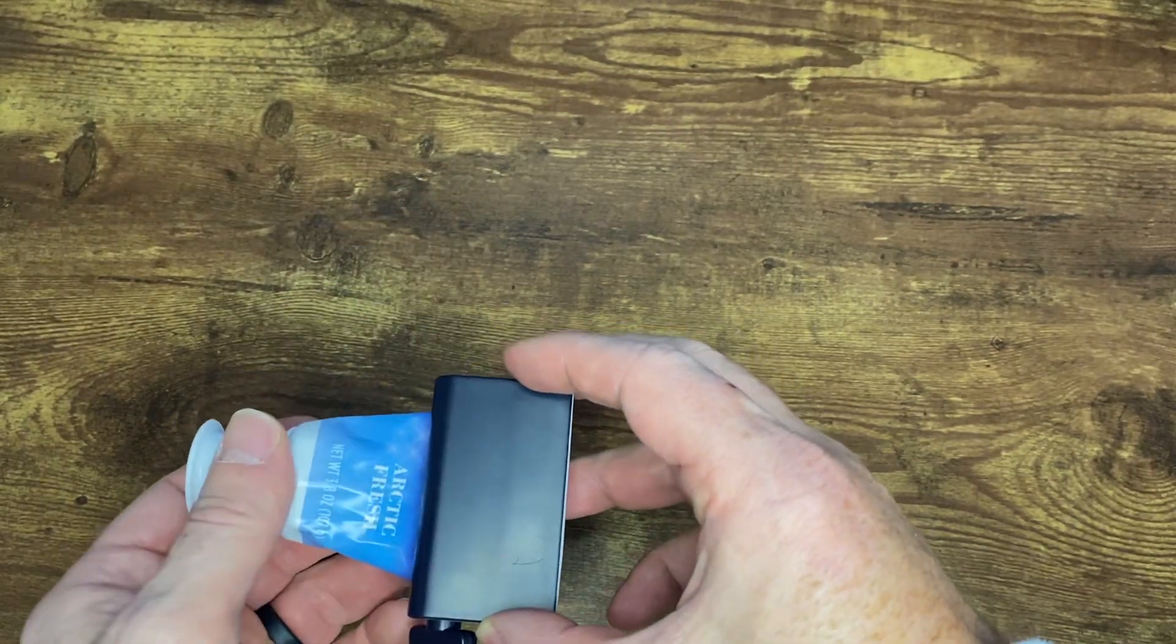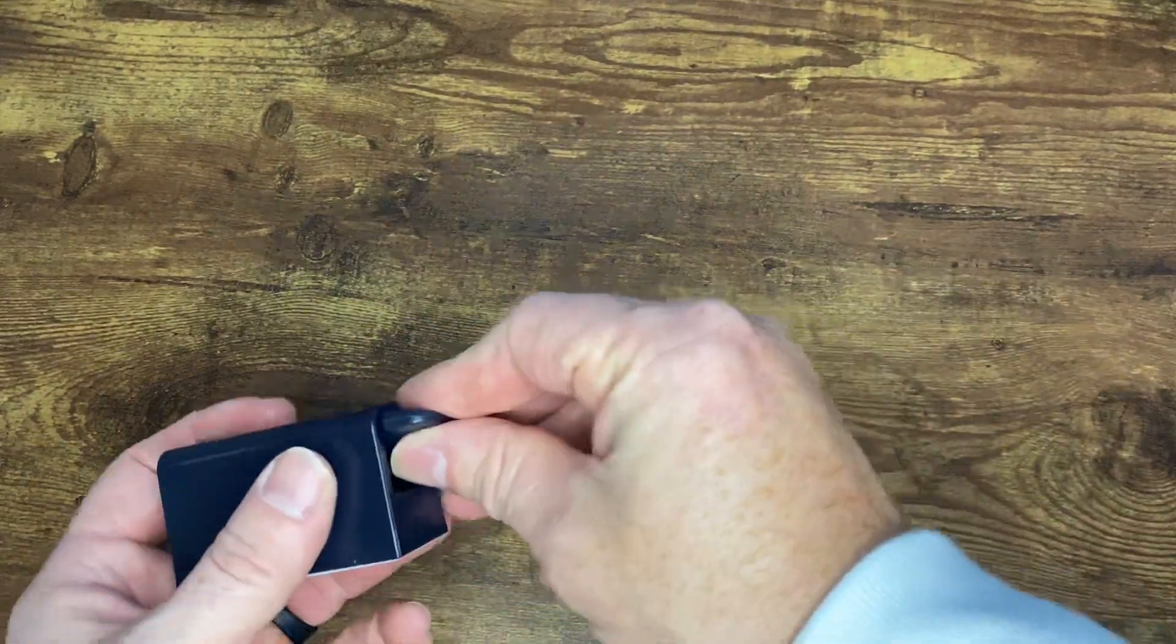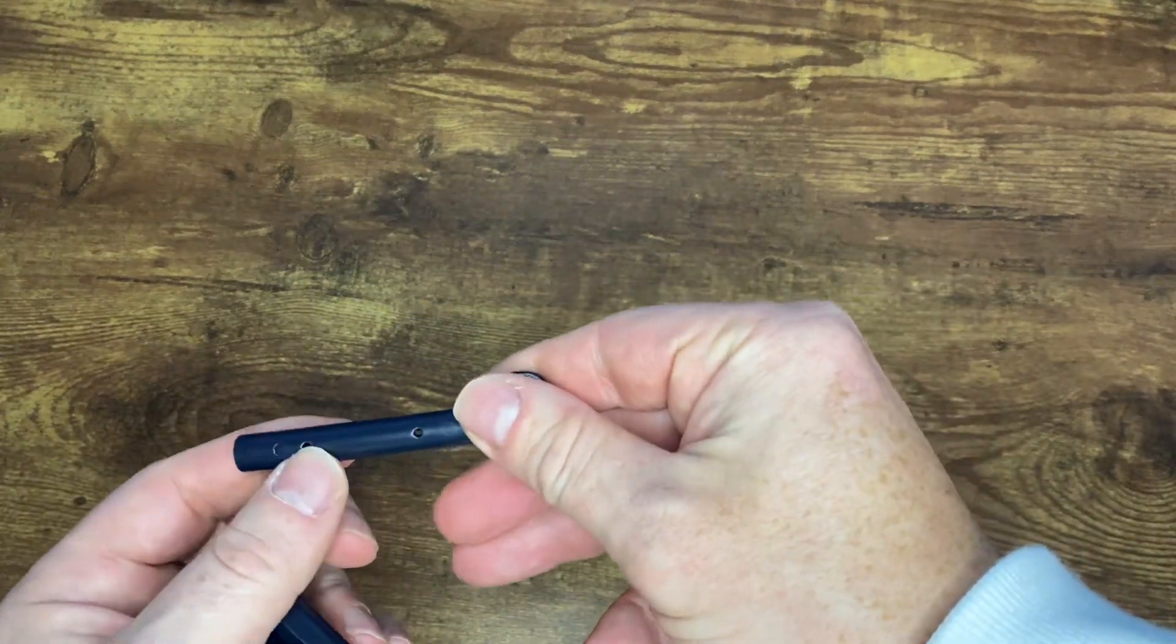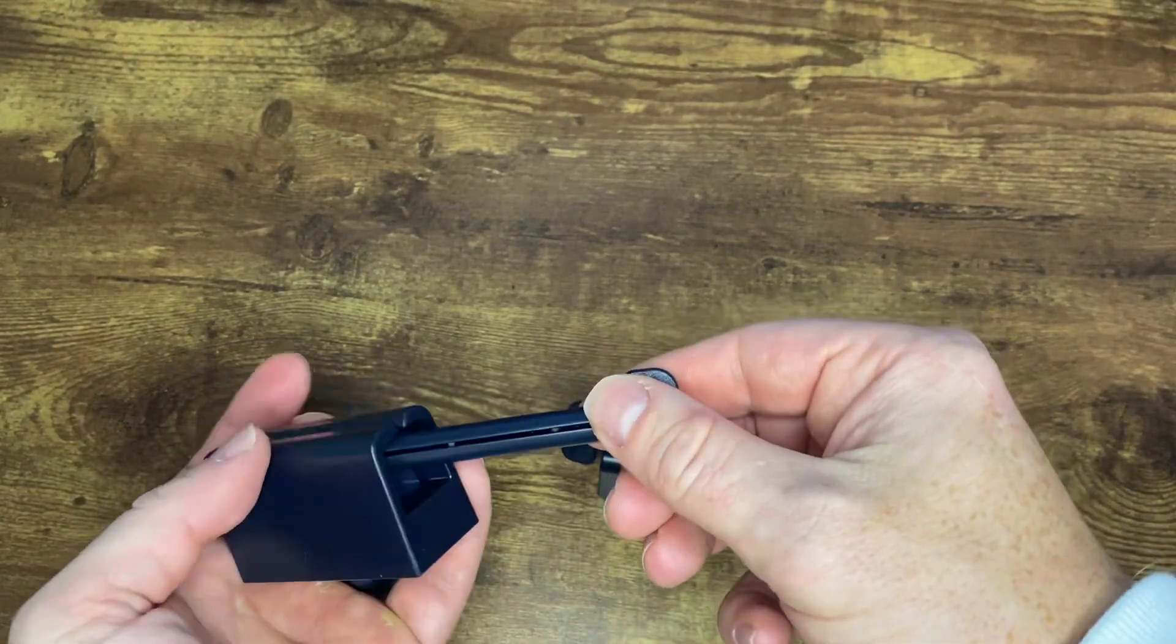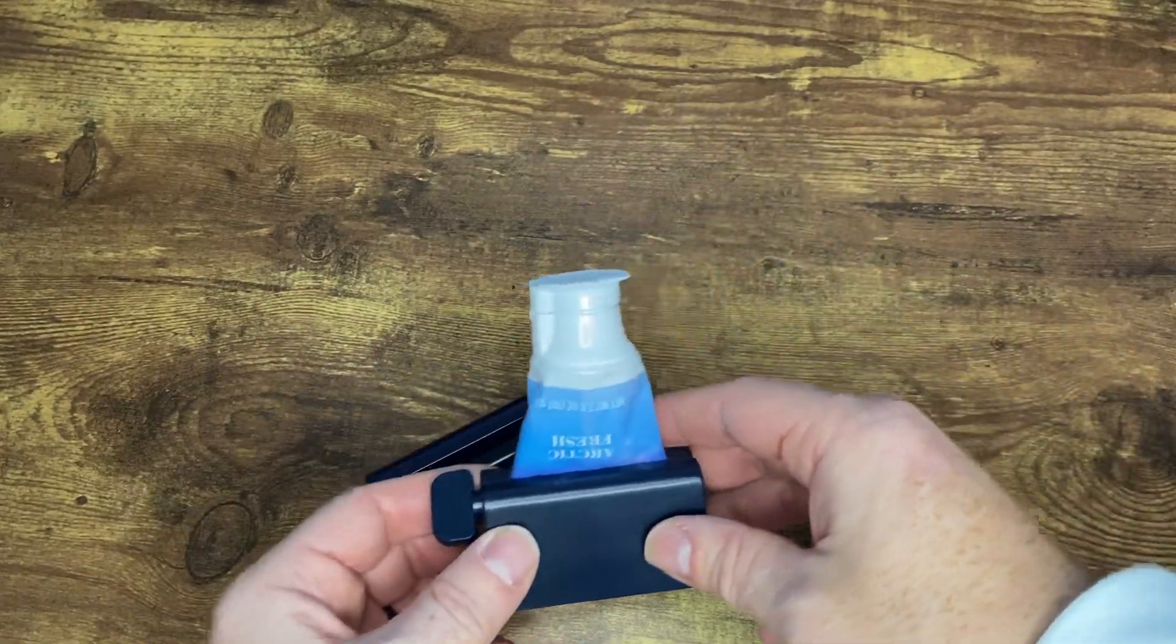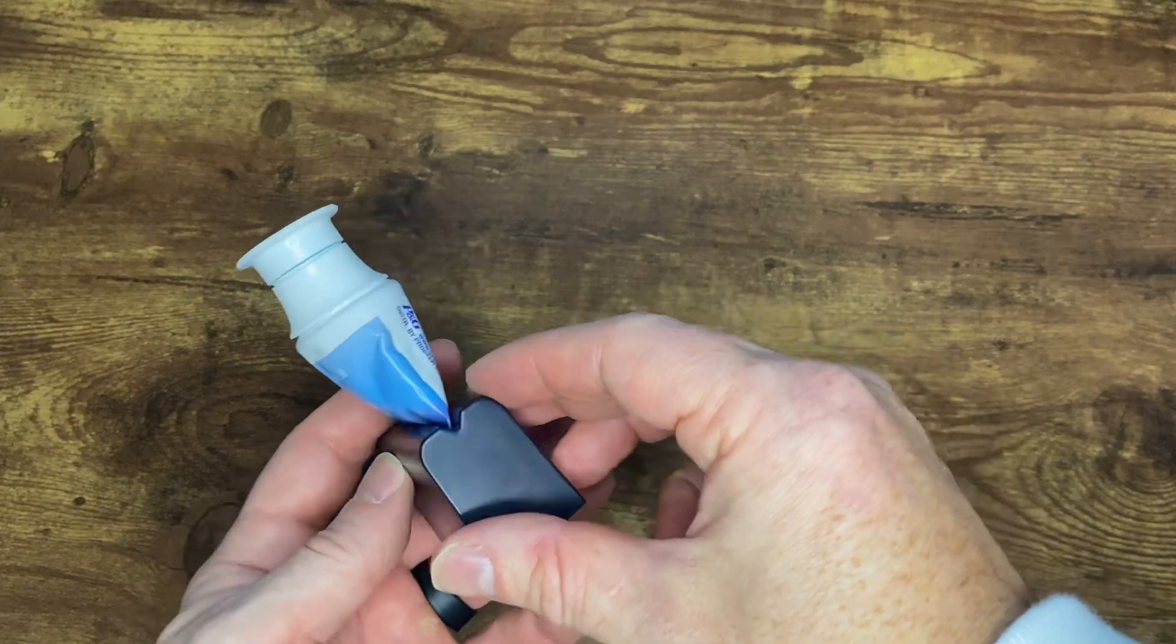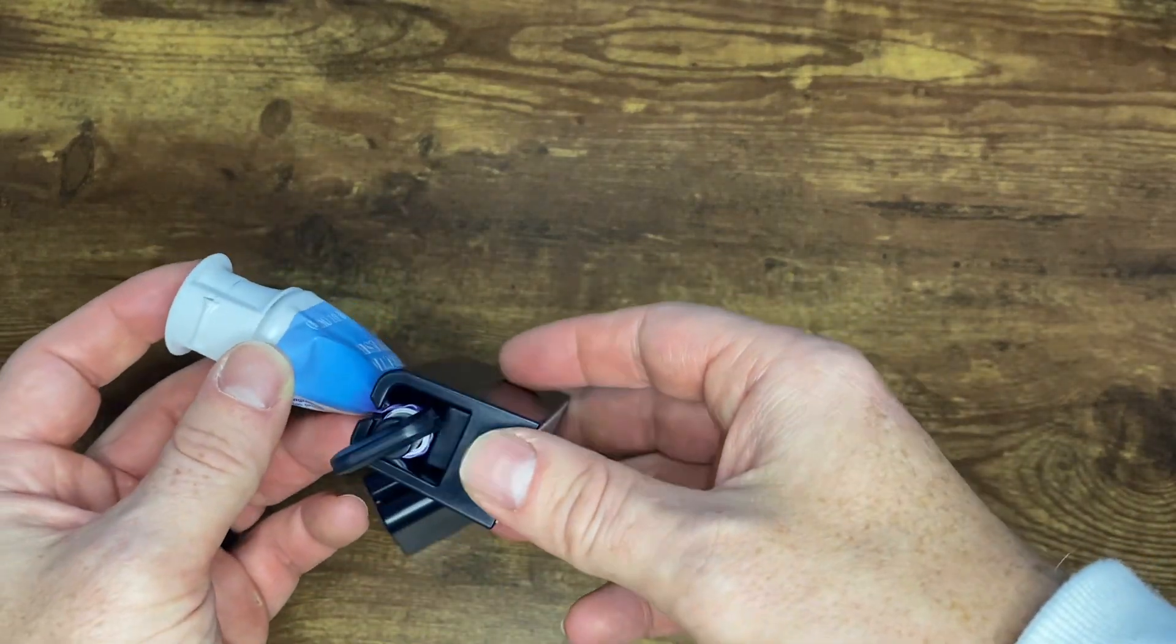So the way this works is you take a tube of toothpaste and this will pop right out. You'll see there's a slit in here and you just slide the end of the toothpaste on here, put it back in, and then as you twist this it will begin to squeeze all that toothpaste up to the top of the tube here so you can get every last drop out of that.